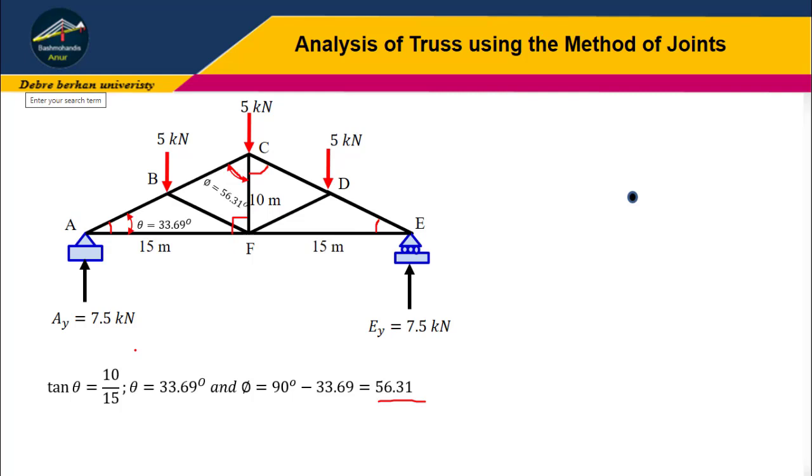Now let us go to the method of joints procedure. First, draw the free body diagram of the joint. We're going to analyze half of the truss, so from which joint should I start? The general procedure is to start with a joint that has no more than two unknowns.